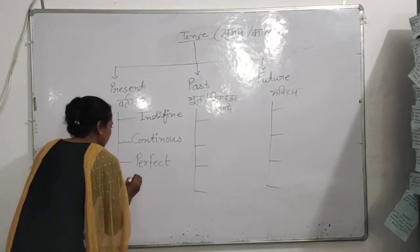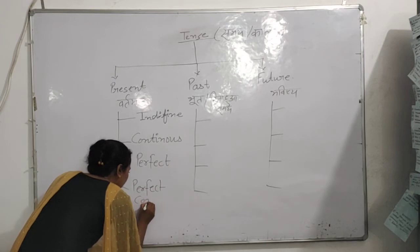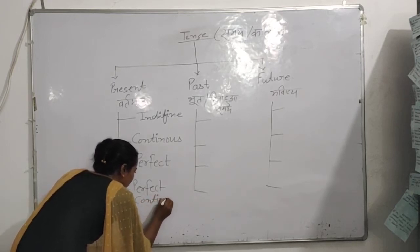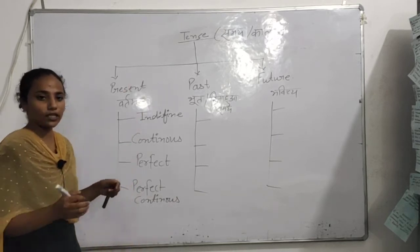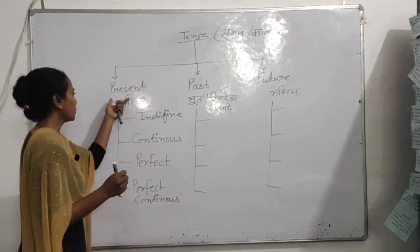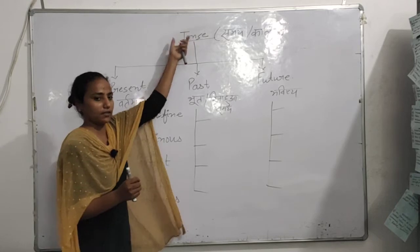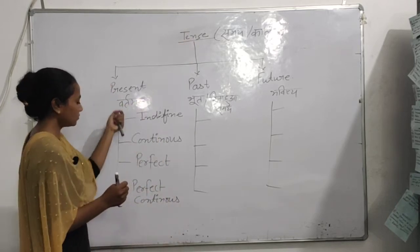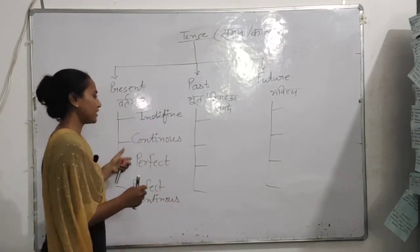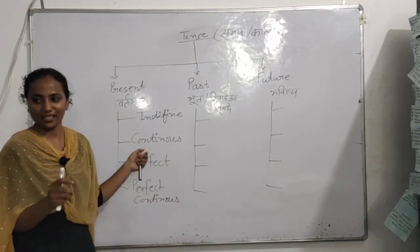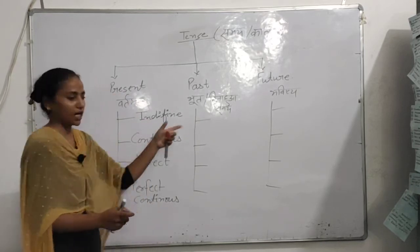अब एक साथ हम बताते हैं — जो present हमारा tense होता है, वो चार प्रकार का होता है: Present Indefinite Tense, दूसरा Present Continuous Tense, तीसरा Present Perfect Tense, और चौथा Present Perfect Continuous Tense. मैंने एक साथ नहीं दिखाया है — मेरे पास space की कमी थी इस वजह से।